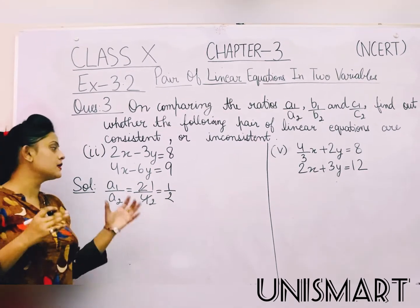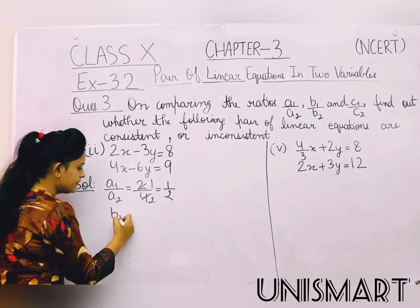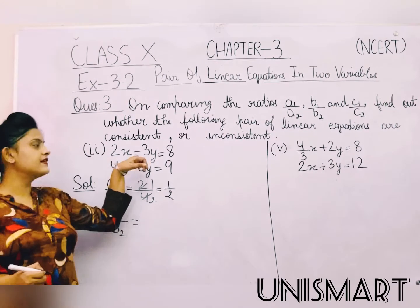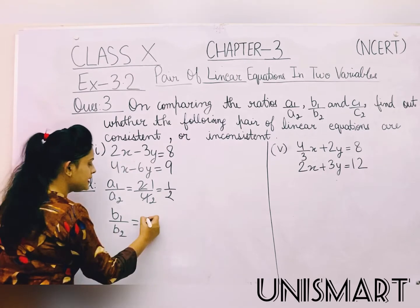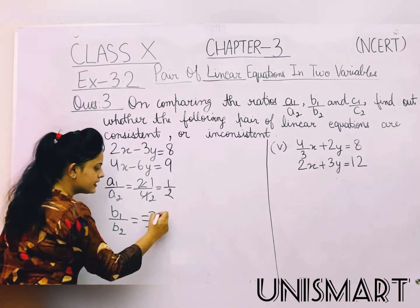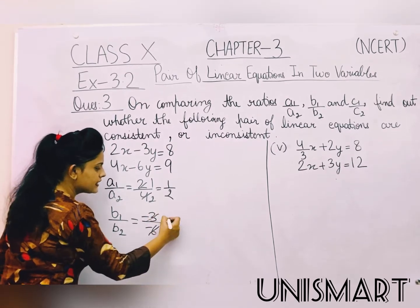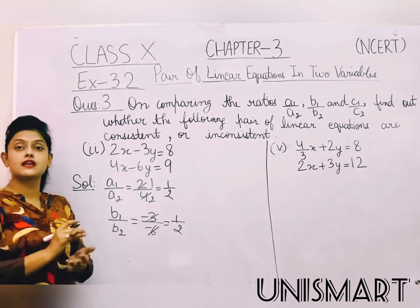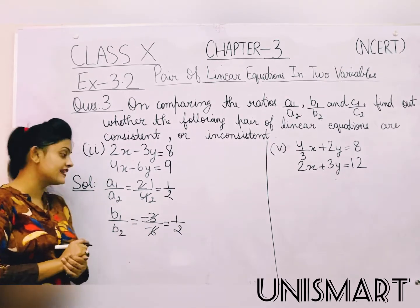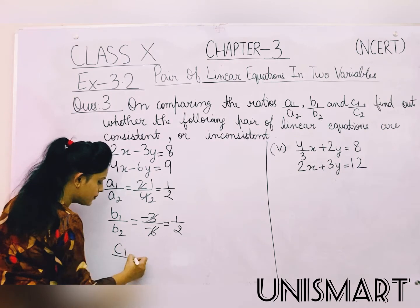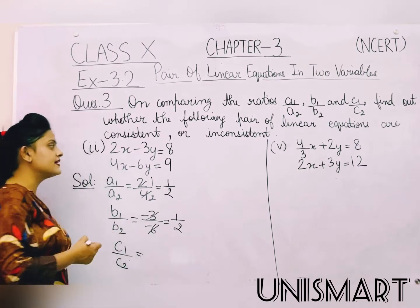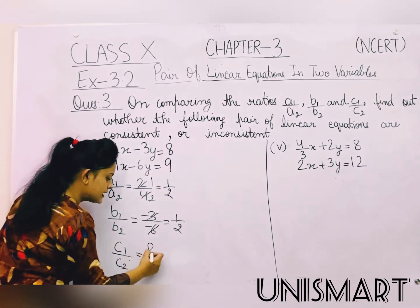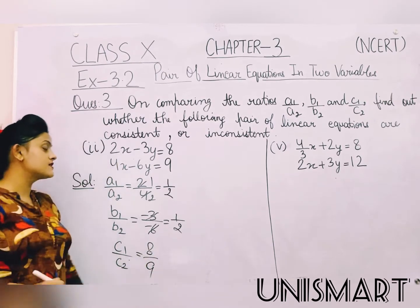Now we find b1 upon b2. b1 is minus 3 and b2 is minus 6, so these will cancel out and we get 1 by 2. So our first two ratios are coming equal. Now we find c1 upon c2: c1 is 8 and c2 is 9, so that gives us 8 by 9.